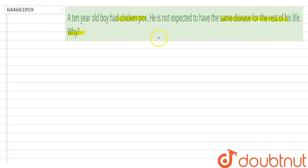So when the boy gets chickenpox, the immune system of the boy gets activated or becomes active against the virus.